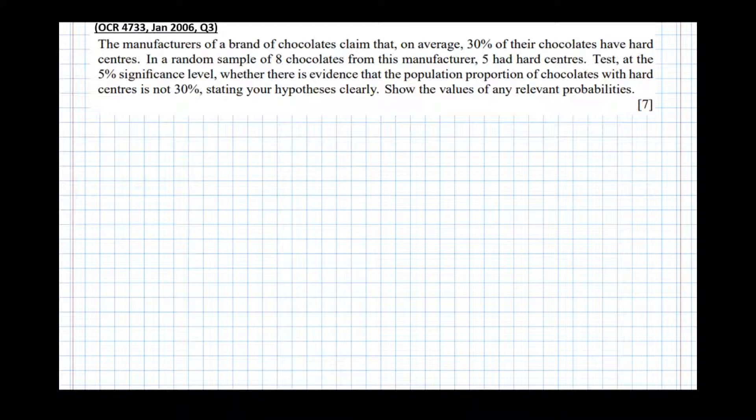Right, so the first thing we're going to do—and anything worth marks I'm going to draw in red. First thing we're going to do, as I showed you in the previous tutorials, is define what we're testing in words. So p is what we're testing for, and it's the proportion of chocolates with hard centers, and that's worth a mark. It may differ from exam board to exam board, but the principle of what you need to write down is the same across all of the exam boards.